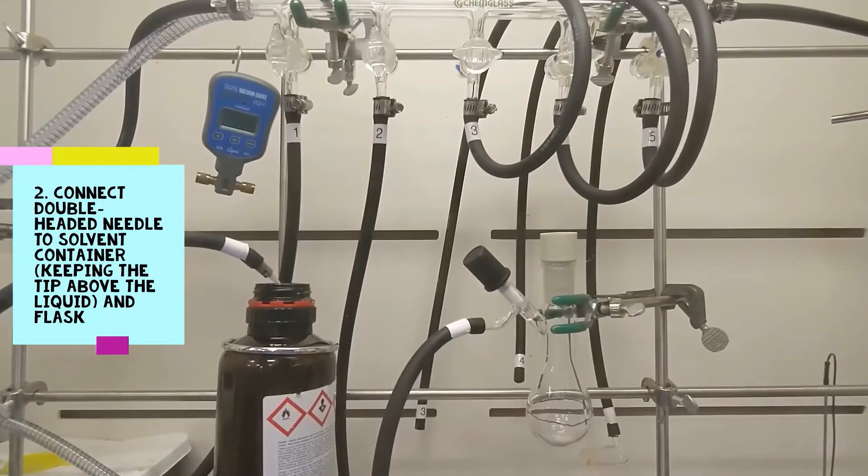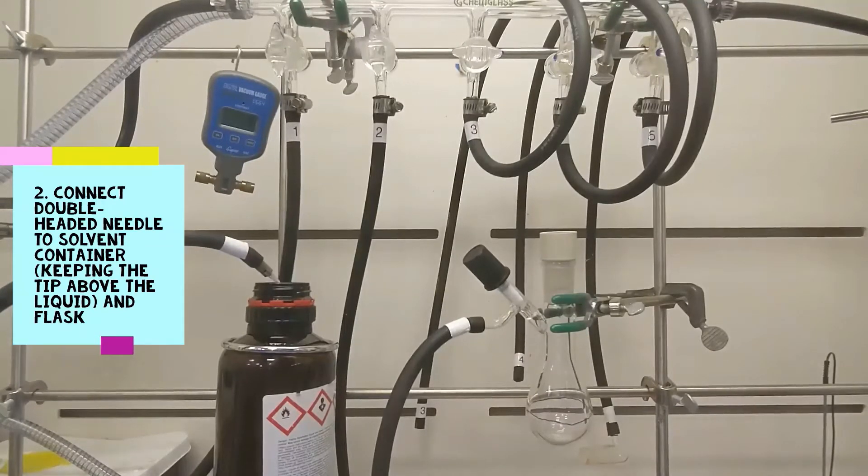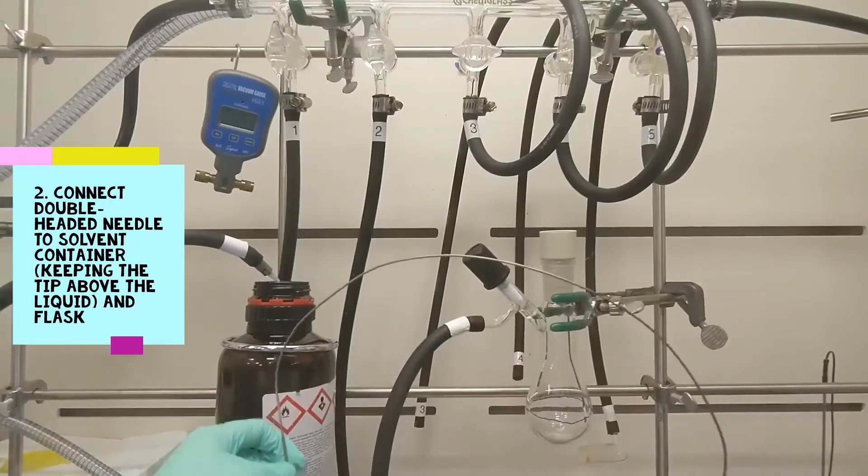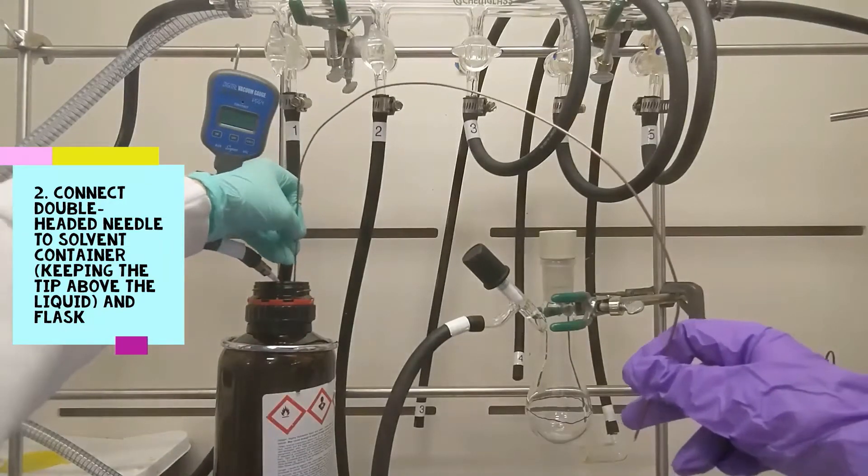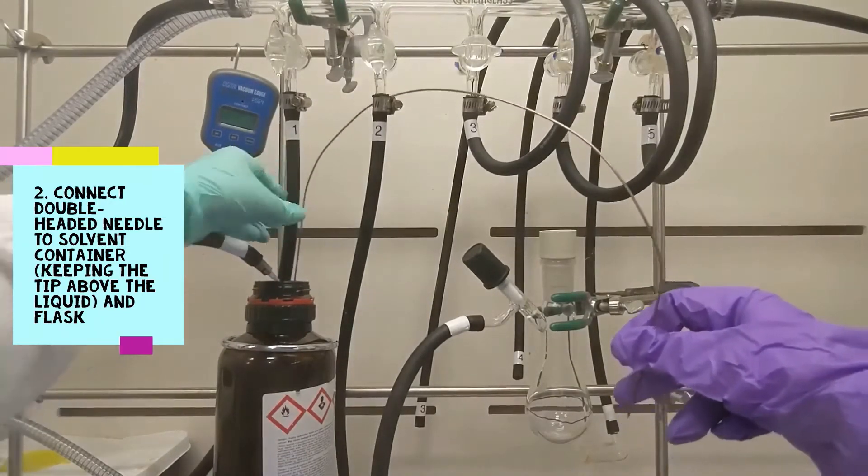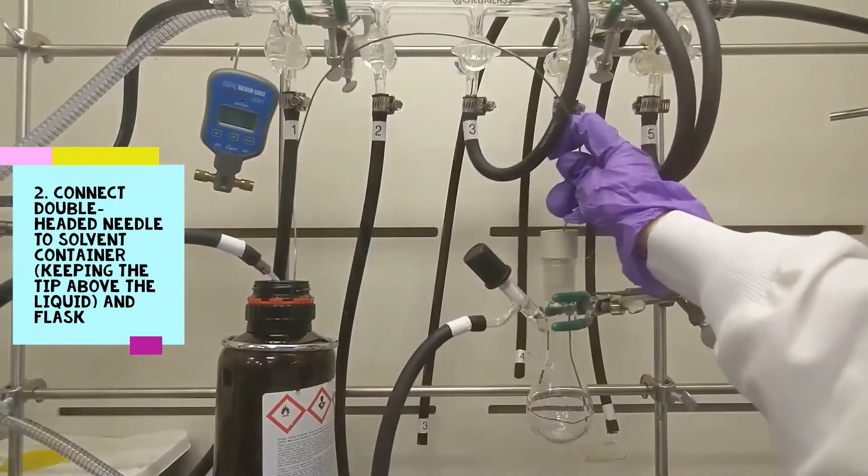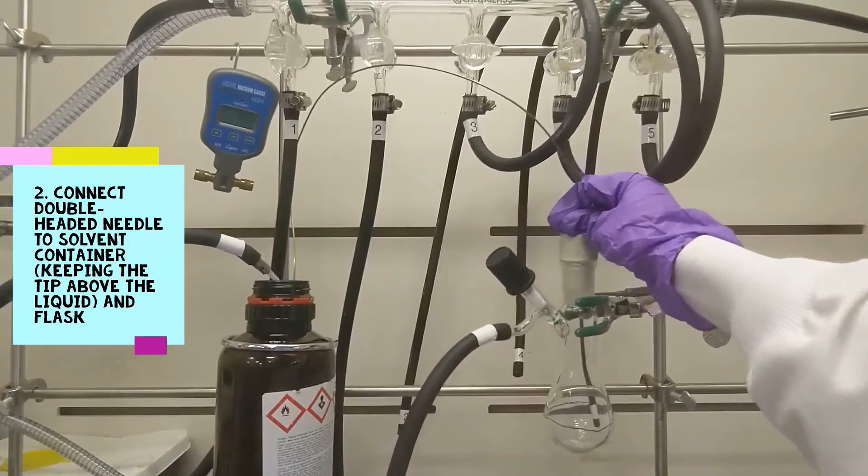Step two, take a double-headed needle and push one side into the septum of your solvents container and connect the other side to your flask. Keep the tip in your solvent container just above the liquid surface right in the nitrogen region. Do not push the needle into the solvents just yet.